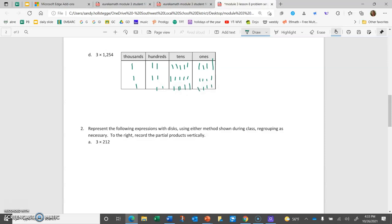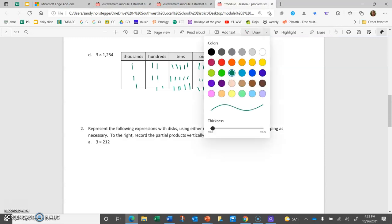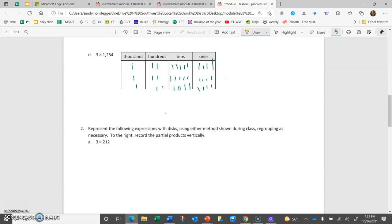To do our bundling, starting in the ones place, I see 4, 8, 12 ones. I will bundle 10 of those, bring it over as a 10. I have only 2 ones left. In my tens place, I count 5, 10, 15 plus 1 more makes 16. I'll bundle 10 of those, bring it over as 100, and that left me with 6 tens. In my hundreds place, I see 2, 4, 6, 7. No way to bundle those. And in my thousands, I have 3. So I see 3,762.